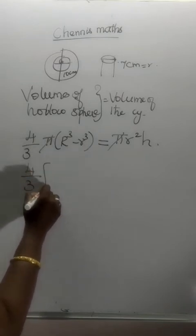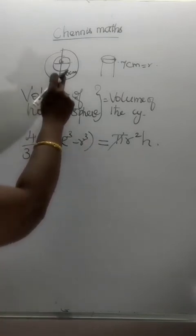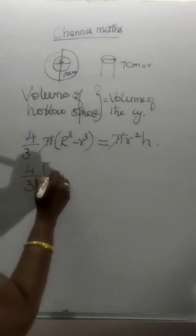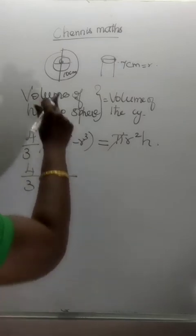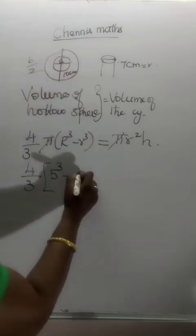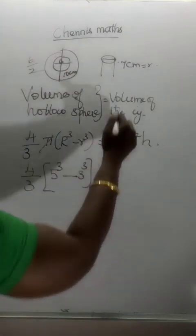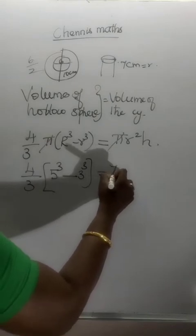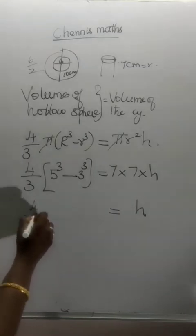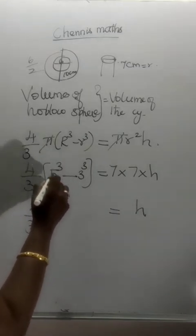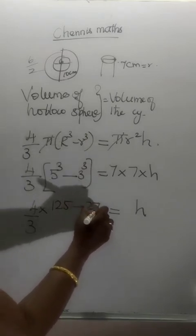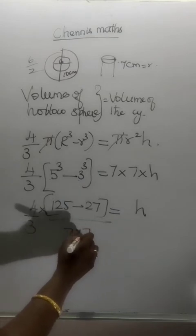4 by 3 into capital R cubed — R is 10 divided by 2, which is 5 — so 5 cubed. Minus small r: diameter is 6 centimeters, so radius is 3 centimeters, giving 3 cubed. This equals 7 into 7 into h. 5 cubed is 125, 3 cubed is 27. Divided by 7 into 7.